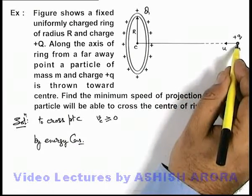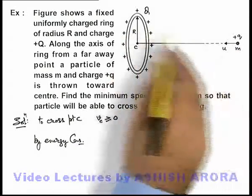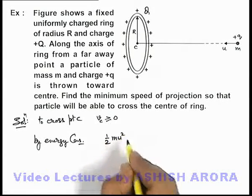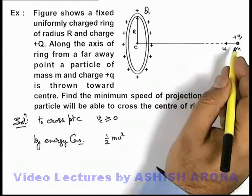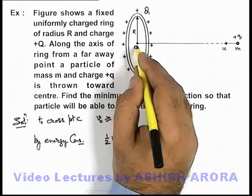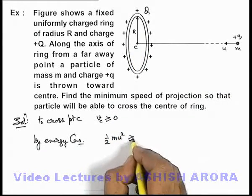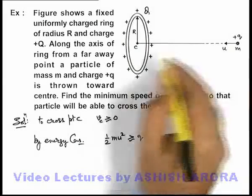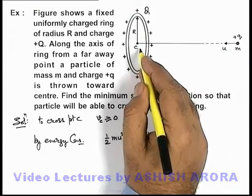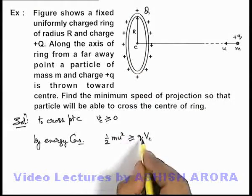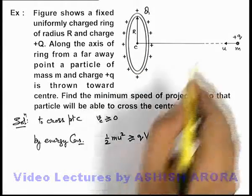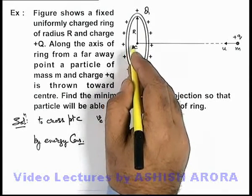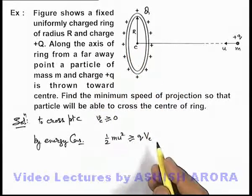When the particle was at a far away point, there won't be any interaction energy, so its kinetic energy would be only ½mu². And when it'll reach the center, we can say this energy must be more than or approximately equal to qVc. That means when the particle will reach at center it'll have some speed remaining or left in it, due to which it'll be able to cross.